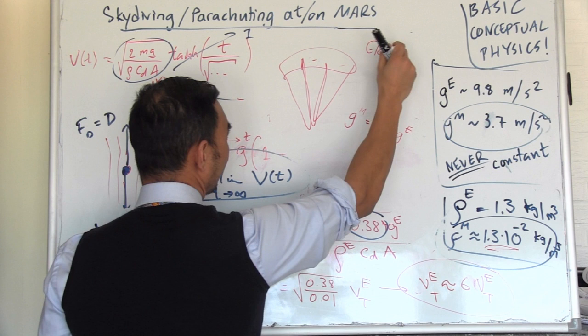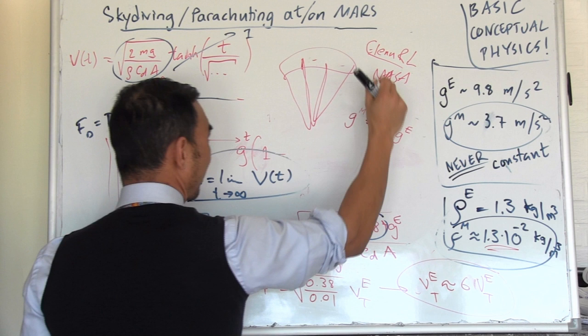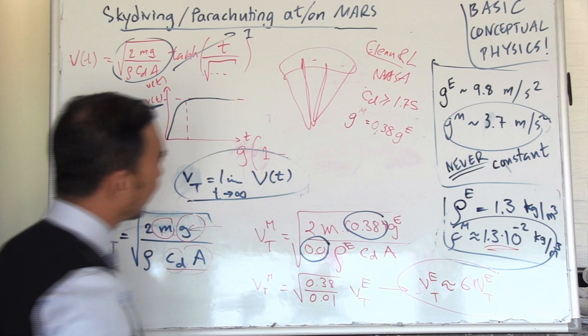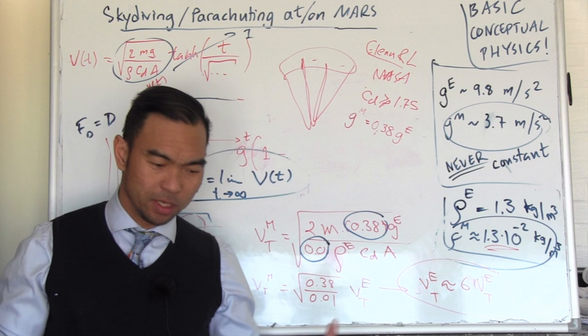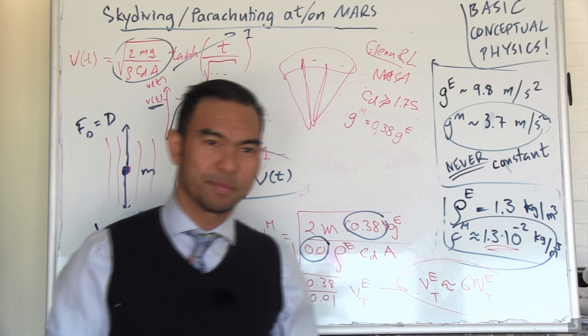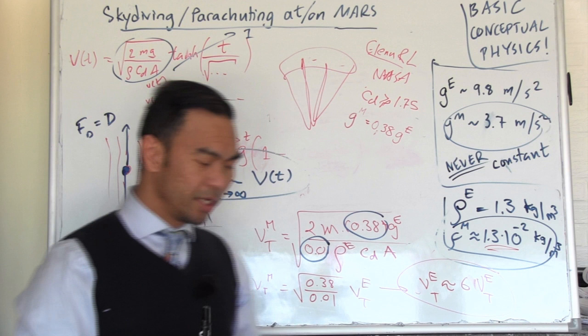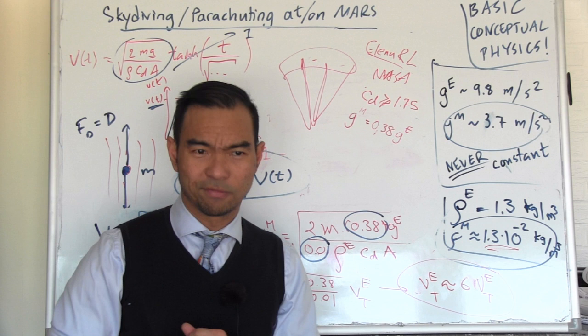Maybe it's minus 10 or minus 15 Celsius. You have to find a parachute that has a very high CD. I know that a round parachute, according to Glenn Research Center at NASA, has a CD in excess of 1.75 or something like that. A should be much larger on Earth.